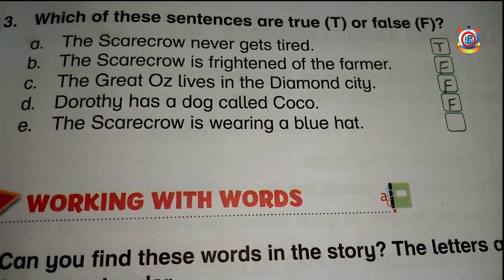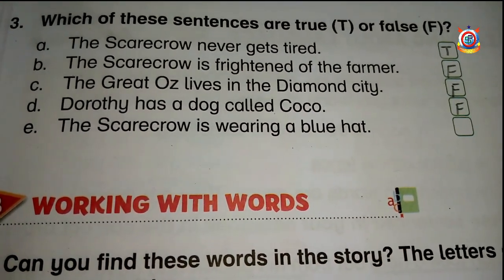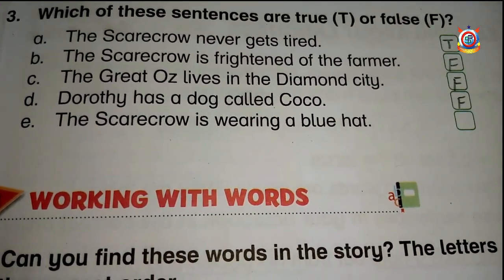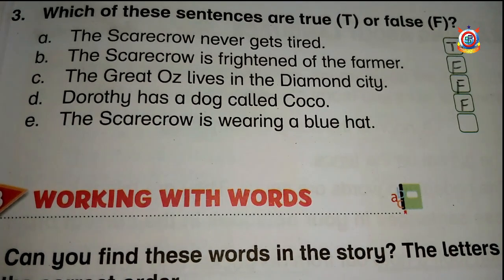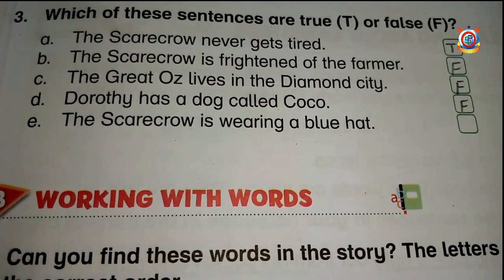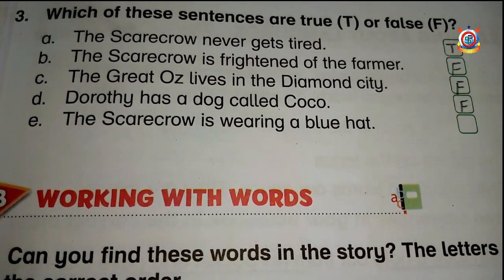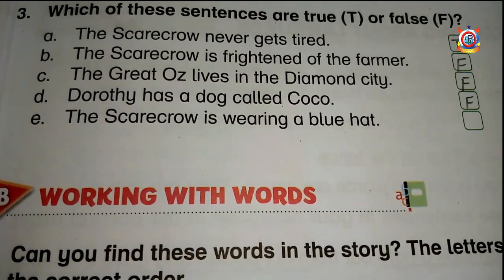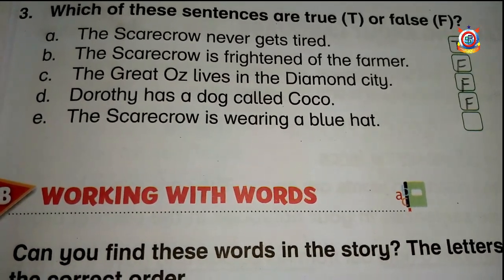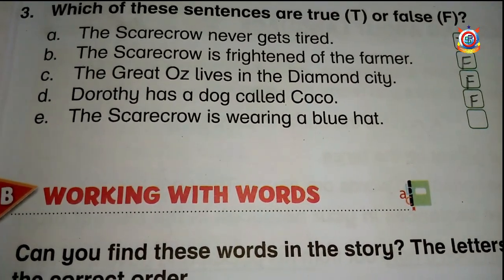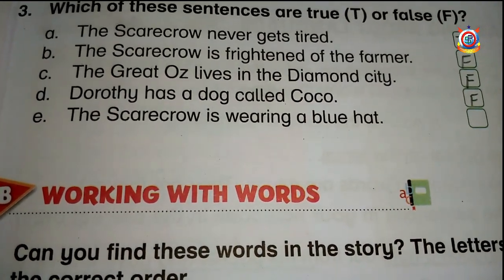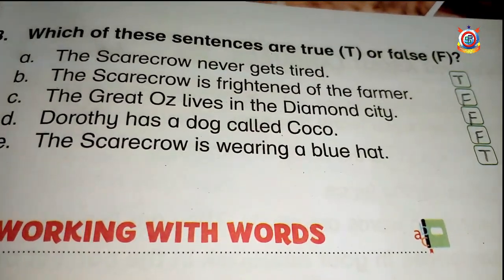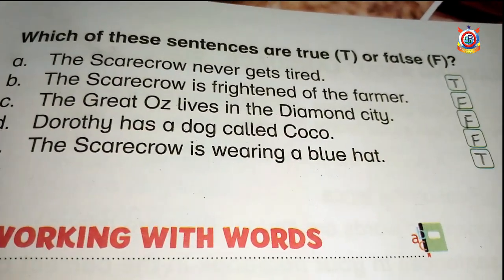The last sentence is: the Scarecrow is wearing a blue hat. Very good — the Scarecrow was wearing a blue hat and here they have written the same thing, so it is correct. What do you write for correct sentences? Very good — we write T. This is it.